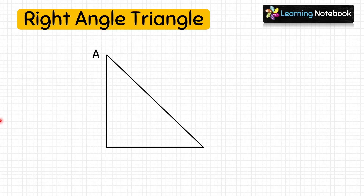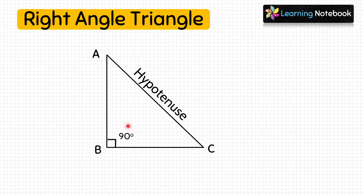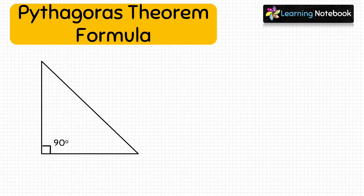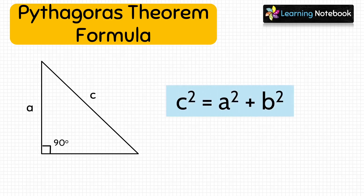Let's consider a triangle ABC right-angled at B. In a right-angle triangle, the side opposite to the right angle is the hypotenuse. Here, the side opposite to angle B is AC, therefore AC is the hypotenuse of triangle ABC. According to Pythagoras theorem, in a right-angle triangle, c² = a² + b², where c is the hypotenuse and a and b are the other two sides.